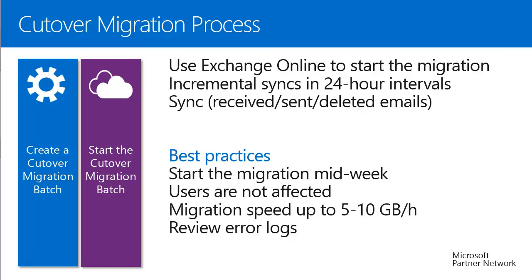The actual migration is started from the Exchange Online Console. First, we do an initial synchronization, which uploads your on-premise mailbox data to the cloud. After that initial synchronization, we perform incremental synchronizations each day, synchronizing all changes in the on-premise mailbox — new emails received, emails sent, and deletions are all synchronized to the cloud mailbox.